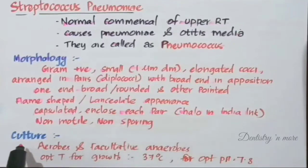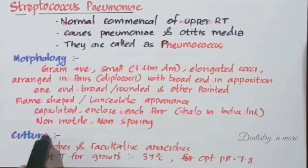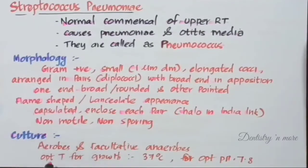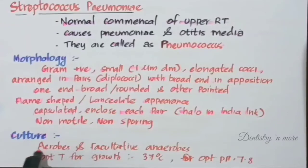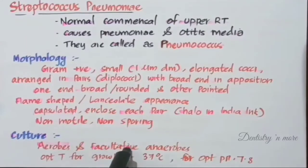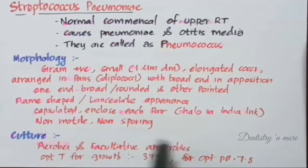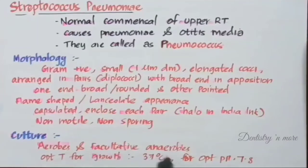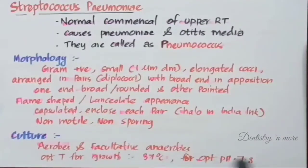Next is the culturing of Streptococcus pneumoniae. They are aerobes and facultative anaerobes. The optimum temperature for their growth is 37 degrees Celsius and the optimum pH is 7.8.